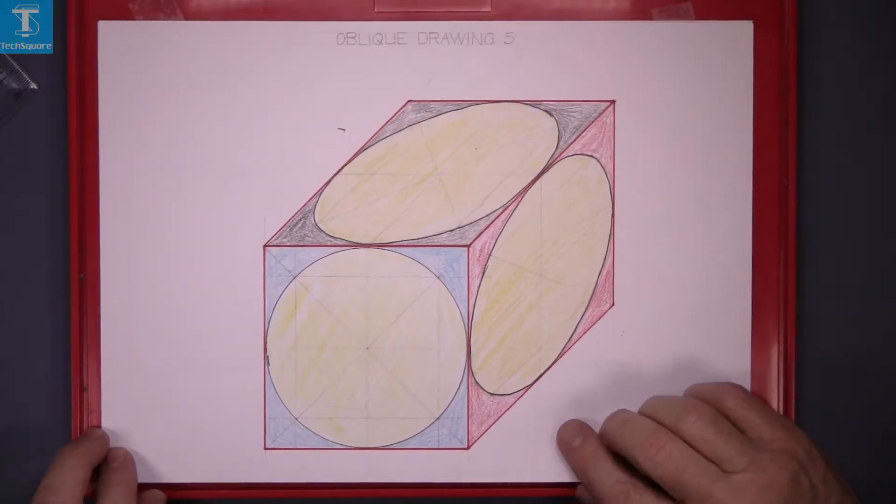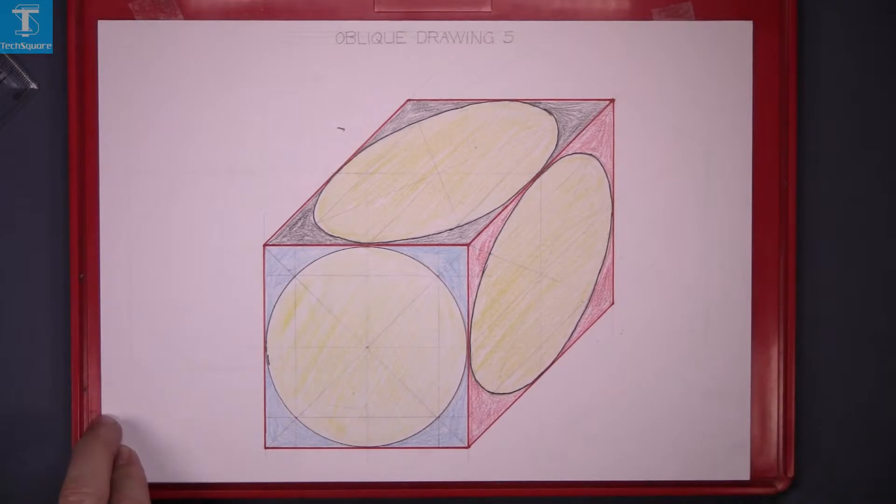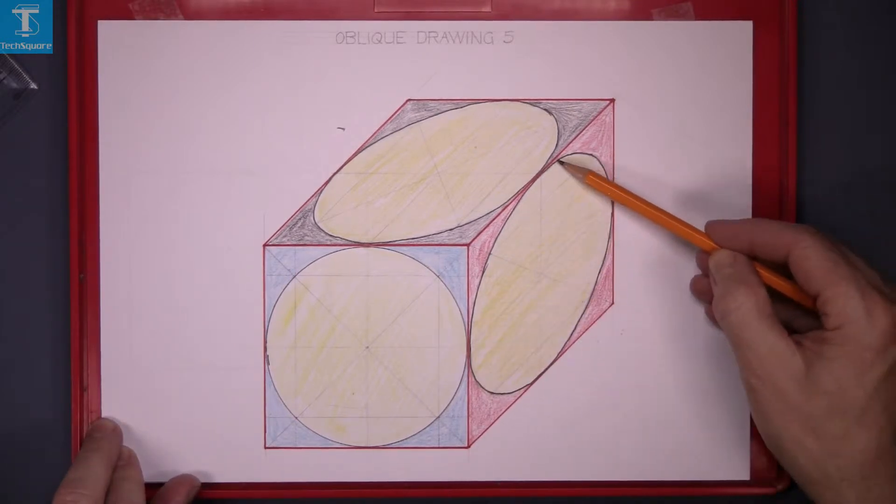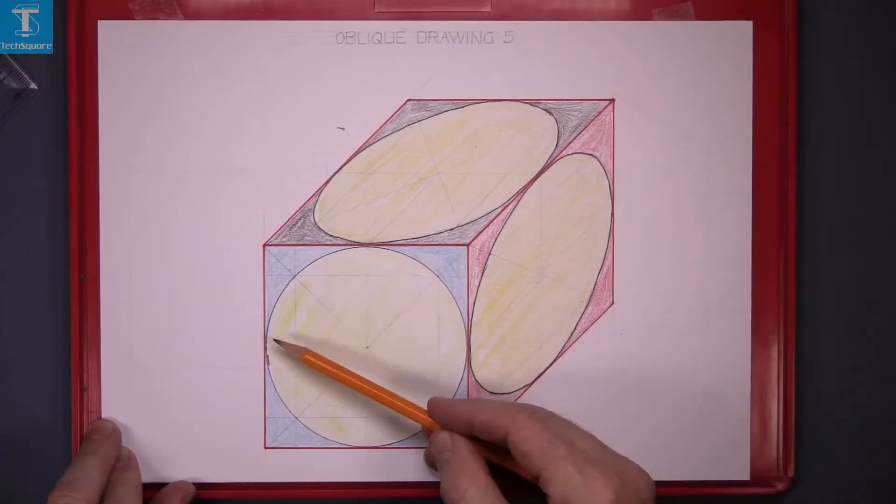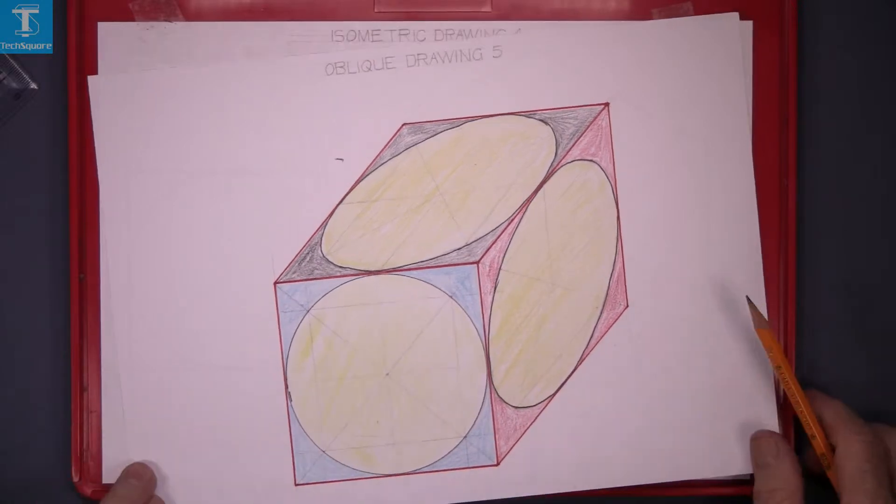In the oblique drawing, there is an oval shape and an oval shape, but one of the circles is a perfect circle.